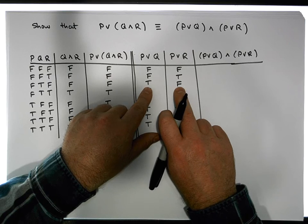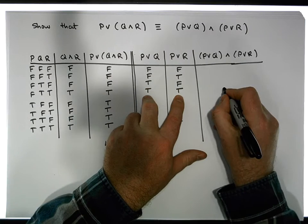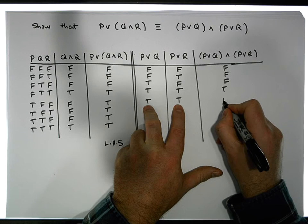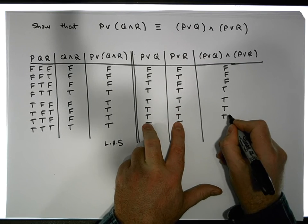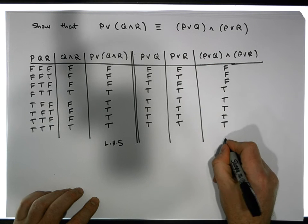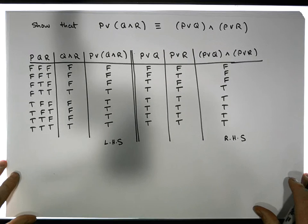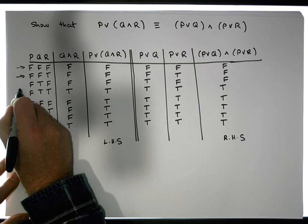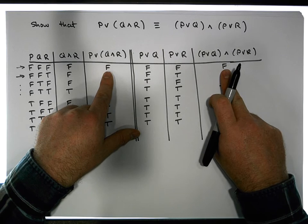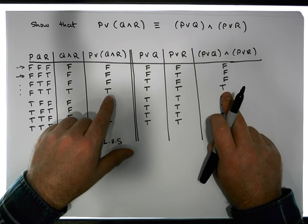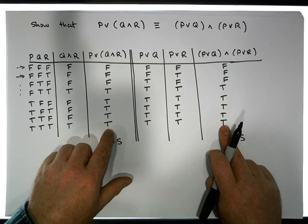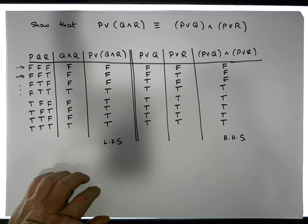We AND the P OR Q column with the P OR R column. AND only gives true when both are simultaneously true. Row one: false-false gives false. Rows two and three are also false somewhere, giving false. Row four onward: true-true, true-true, true-true, true-true all give true. Comparing this right-hand side column with the left-hand side column, all outputs match under every possible input — confirming the second distributive law.